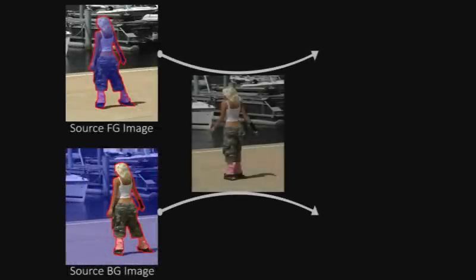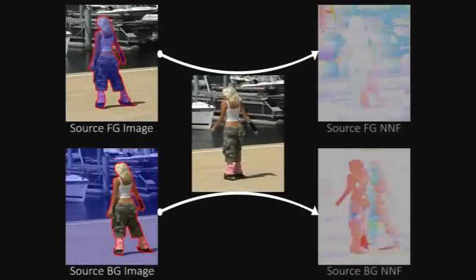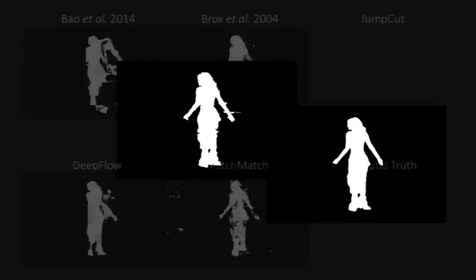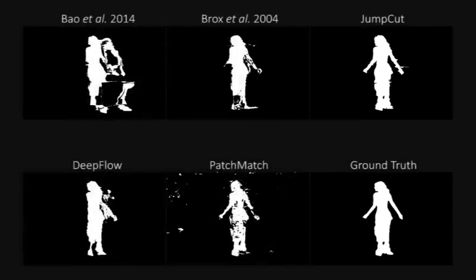Next, two separate nearest neighbor fields are computed for both aligned source images using an improved localized PatchMatch technique. This is the initial mask estimated by our Split-NNFs. It may be seen that it's much more accurate than previous correspondence-based methods.